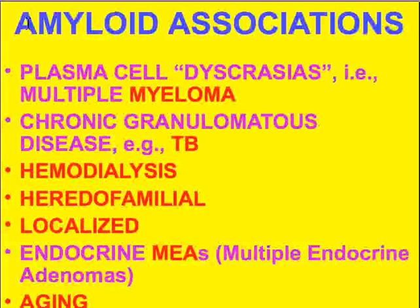Wherever you have chronic buildup of immune proteins — like in multiple myeloma or chronic granulomatous diseases like TB — these are always areas that have a high risk of amyloidosis.